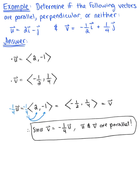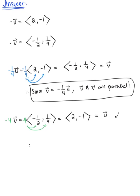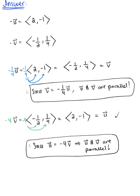This is not an exclusive solution — we can also work in the reverse order. Starting with vector v and multiplying both components by negative 4, distributing gives us (2, -1), which equals vector u. Therefore, since vector u equals negative 4 times vector v, they are scalar multiples, and so vector u and vector v are parallel. Either answer works; you only need one, but both are correct.